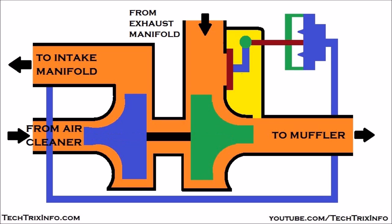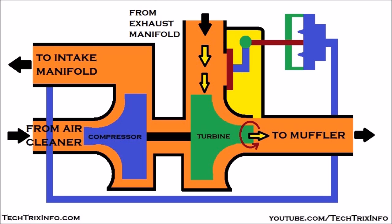Now let's see how a turbocharger normally functions. From the exhaust manifold, when the exhaust valve opens up, the exhaust gas passes towards the exhaust manifold and is rerouted towards the turbine. The exhaust gas comes and hits the turbine, resulting in the rotation of the turbine. After that, the exhaust air moves outside to the muffler. The turbine is connected via a shaft to the compressor, and when the turbine rotates, this shaft also rotates at a very fast rate — almost 150,000 RPM.